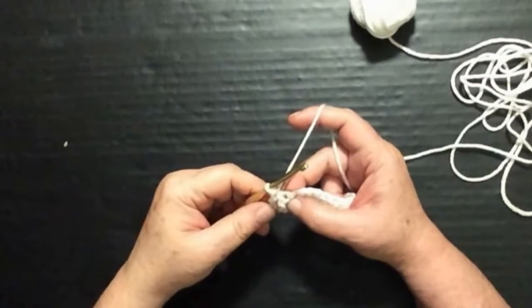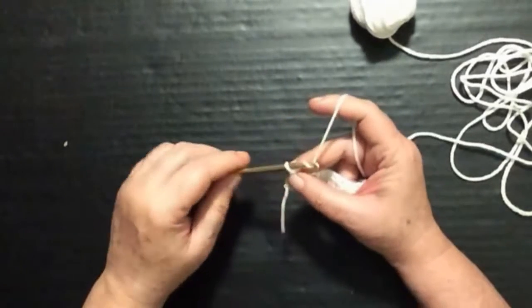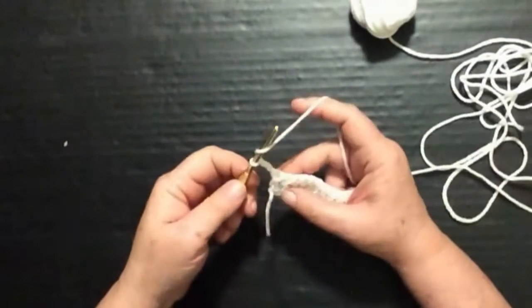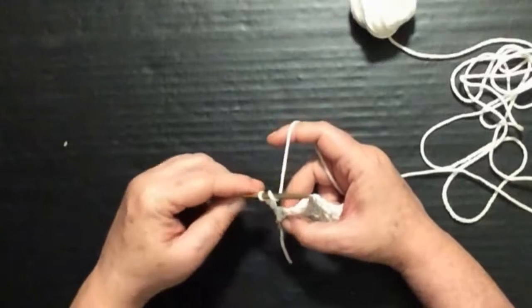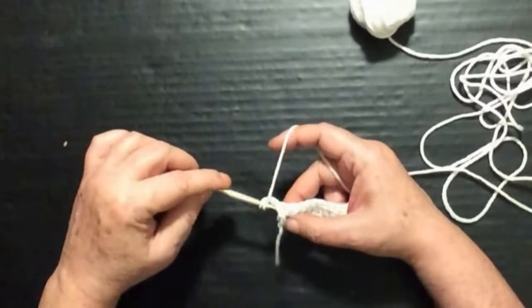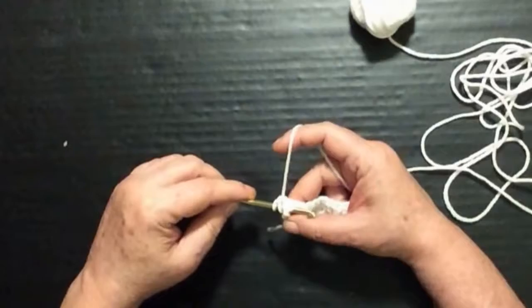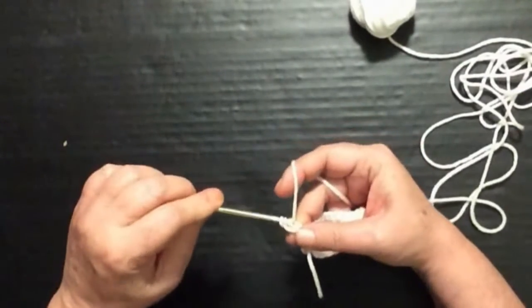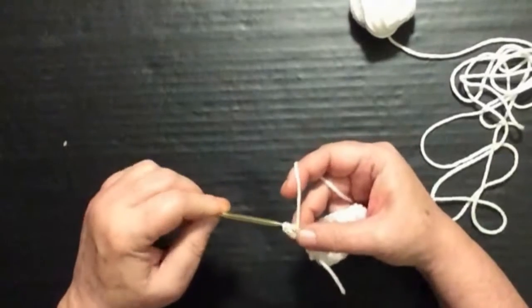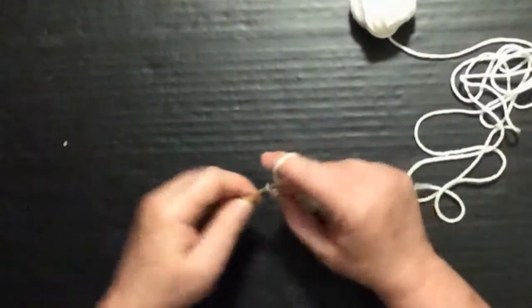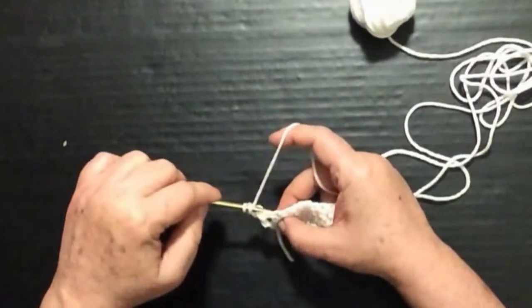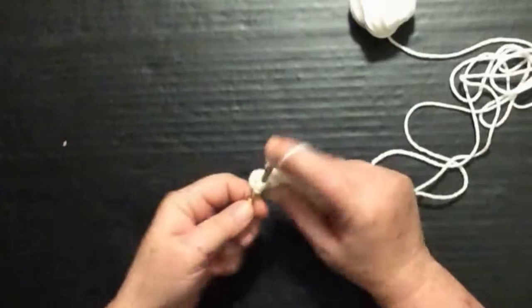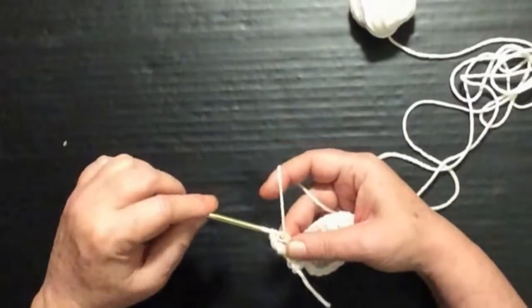Front post and back post double crochet - we're going to do an alternating pattern here. Come up two for our double crochet and we're going to go around the very first post in the back and do a back post double crochet. Now we're going to do a front post double crochet.